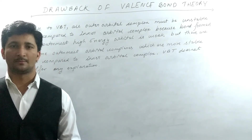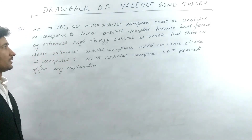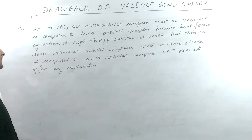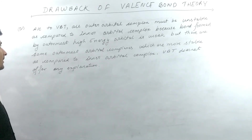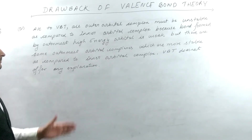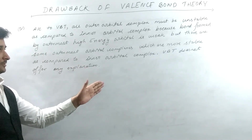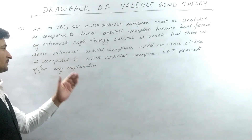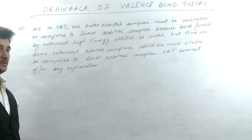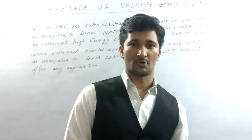The fourth drawback: according to valence bond theory, all outer orbital complexes must be unstable as compared to inner orbital complexes, because bonds formed by the outermost high-energy orbitals are weak. But there are some outer orbital complexes which are more stable than inner orbital complexes, and valence bond theory does not offer any explanation for this. So these were the few drawbacks of valence bond theory.